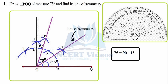What we achieved from this construction is an angle of 75 degrees. Now we have to find the line of symmetry, which is simply the angle bisector. Put the compasses at R, open with a reasonable radius, and you will get point X, which is your line of symmetry — also called the angle bisector. That is your first question.